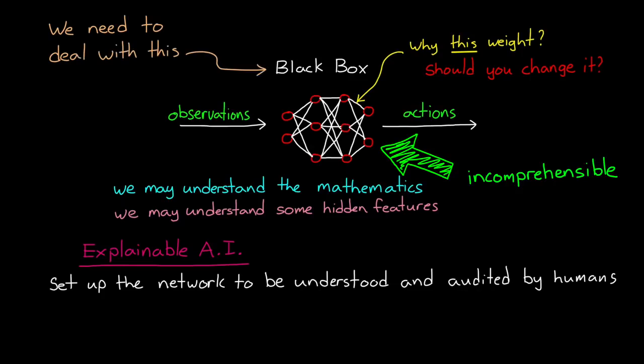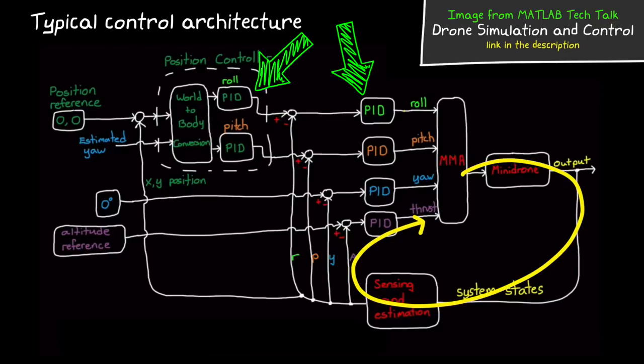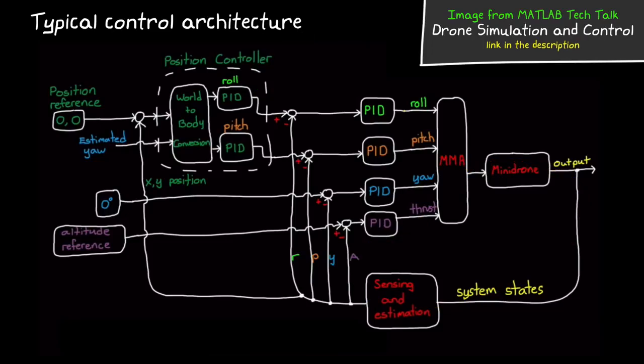However, at the moment the majority of RL generated policies still would be categorized as a black box, where the designer can't explain why the output is the way it is. Therefore, at least for the time being, we need to learn how to deal with this situation. Contrast this with a traditionally designed control system where there is typically a hierarchy with loops and cascaded controllers, each designed to control a very specific dynamic quality of the system.